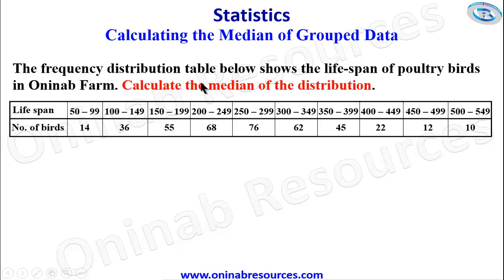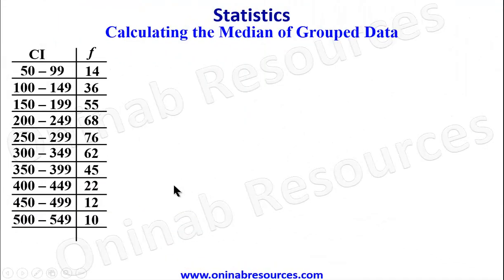We are asked to calculate the median of the distribution. We have the lifespan as class intervals from 50–99, 100–149, up to 500–549, and we have the number of birds given for the respective class intervals. We've arranged the table in vertical form.